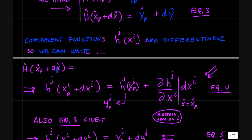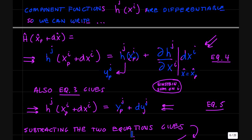So we can write this out in terms of the component functions, h_j. And since the h_j's are differentiable, we can write h of this sum of x_p plus the differential dx^i as the value of h at x_p plus the derivatives of h with respect to x times dx^i. And the values of h_j at x_p are just the y_j's. We also have h_j of x plus dx is equal to y plus dy.